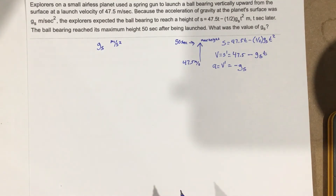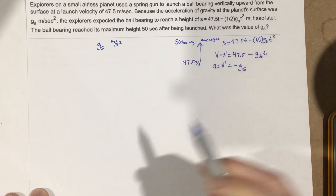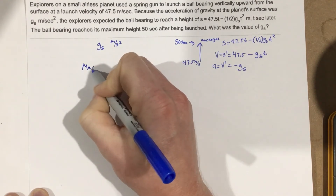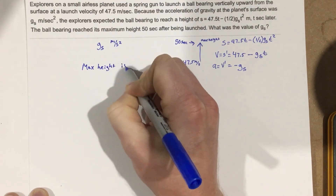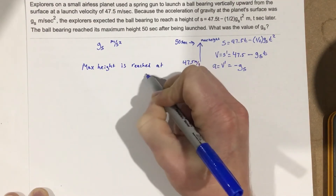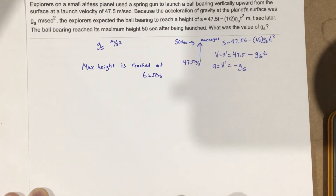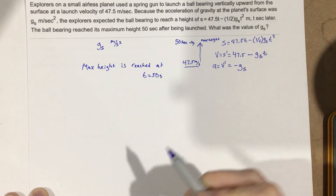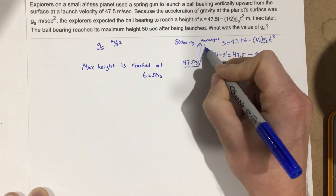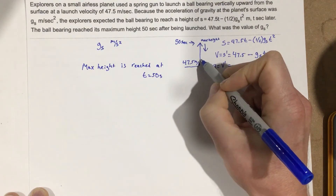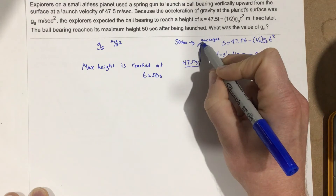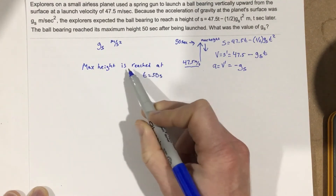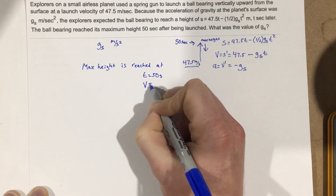Now we have to do some critical thinking. We want to find the value of g_s. We know max height is reached at t equals 50 seconds and the initial velocity is 47.5 meters per second. When we reach max height, the speed slows down until it hits zero and then starts to come back down.